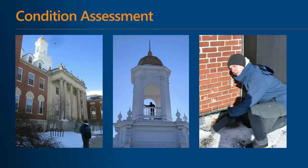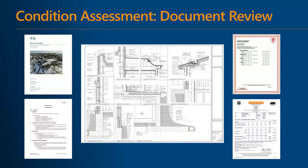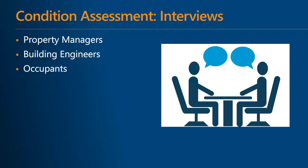Step two is a condition assessment where facts on the structures are gathered. The condition assessment begins with a review of existing documents related to the building envelope, including original construction drawings and specifications, product data and shop drawing submittals, active warranties, and previous assessment reports. The document review is followed by interviews with property managers, building engineers, and occupants, which are helpful in discovering existing problems such as leaks and material deterioration, as well as a repair history for the buildings.